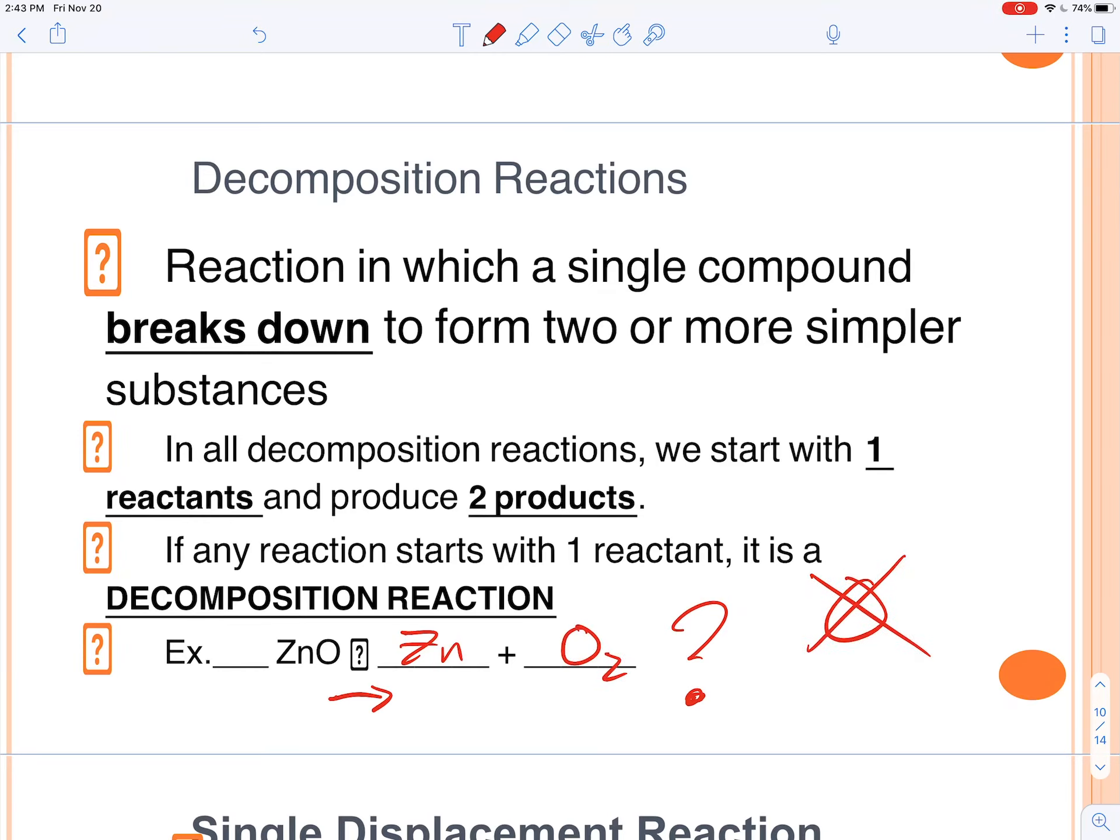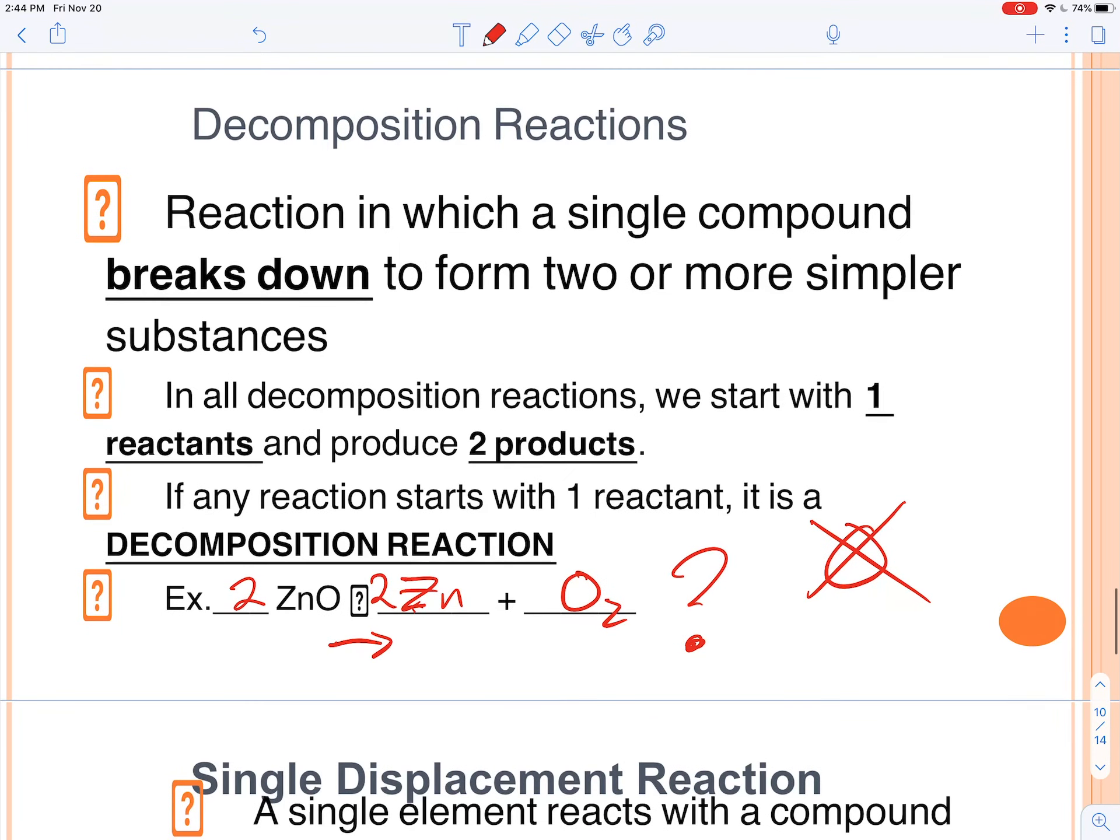So it's actually zinc and O2. Remember, oxygen doesn't like to be by itself. So zinc and O2, now we want to balance it. We've got two oxygens on the right side, so I'm going to put two here and a two in front of the zinc as well.